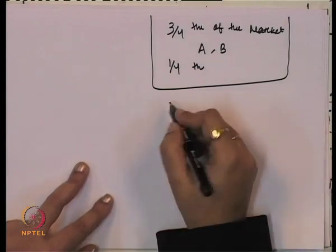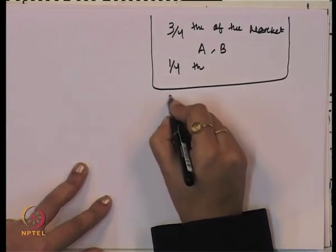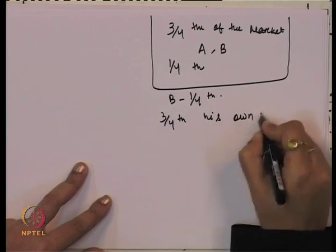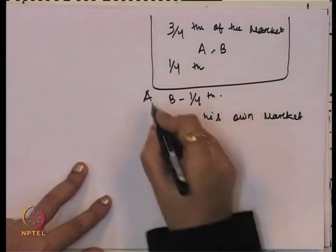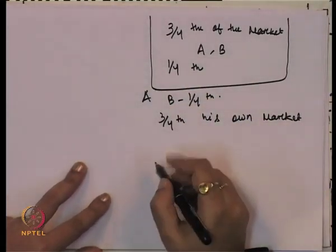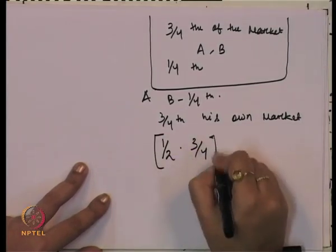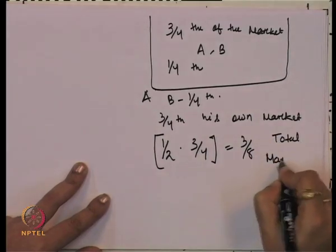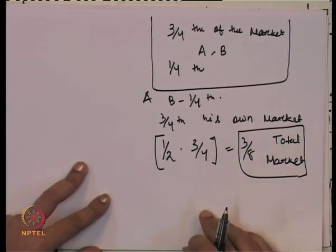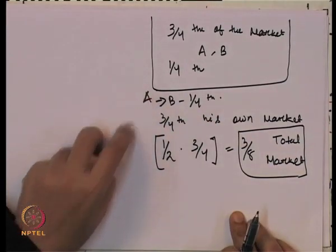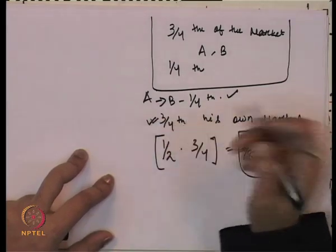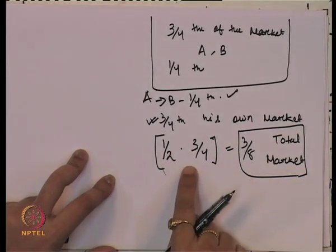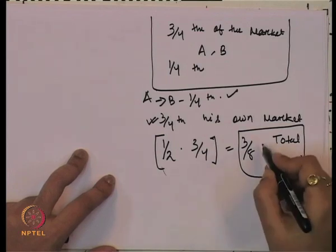In period two, firm A assumes that B is going to produce one fourth of the market, so A feels three fourths is his own market. Since he produces only half of his available market, he will produce half of three fourths, which comes to three eighths of total market. So A is going to produce three eighths of the total market.